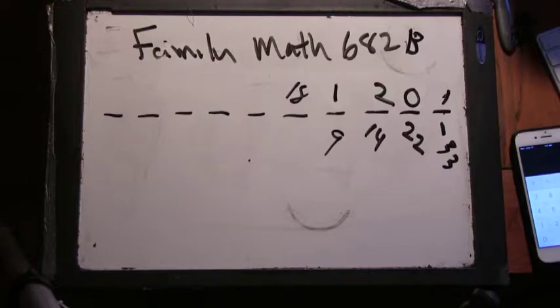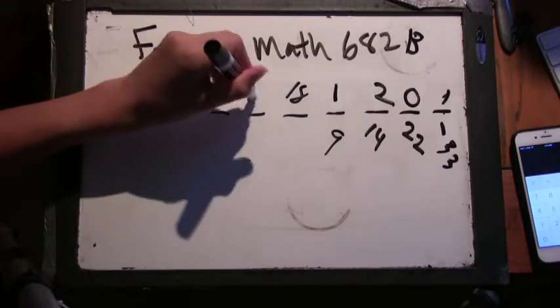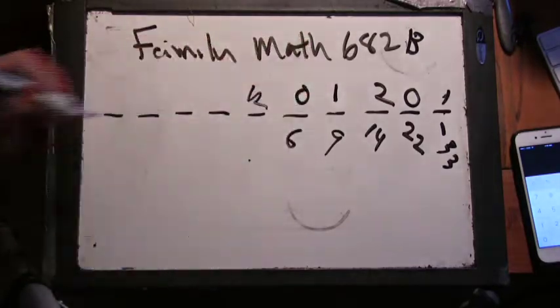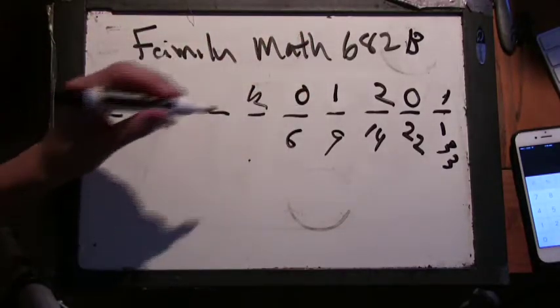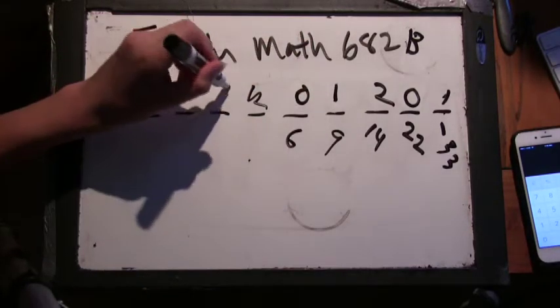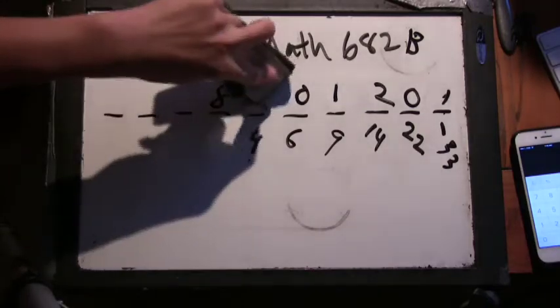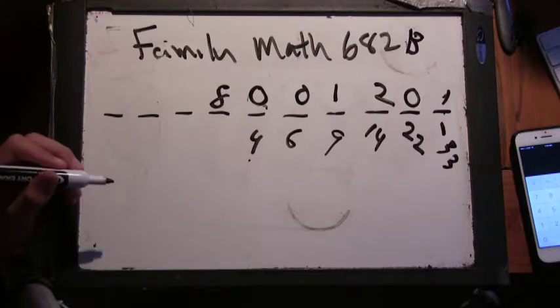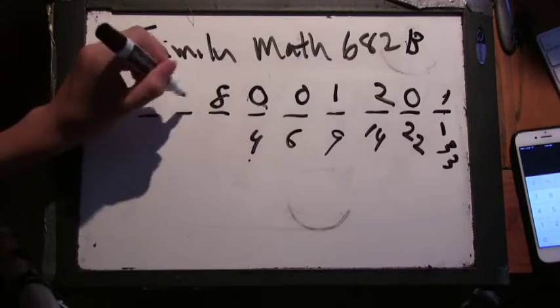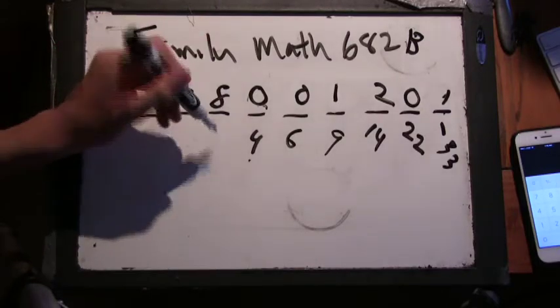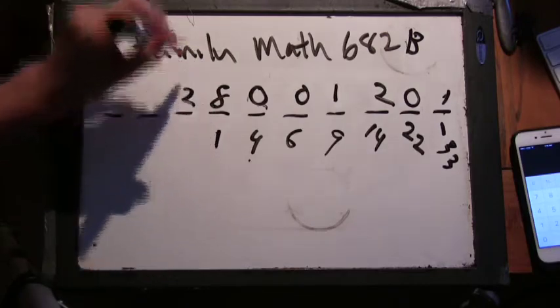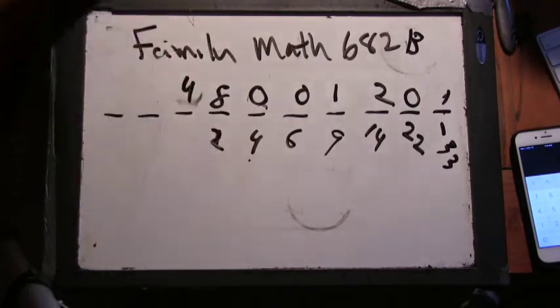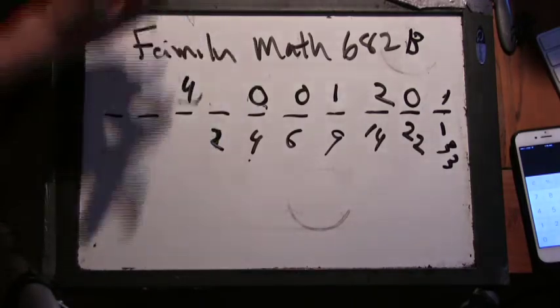Now we're going to have six groups, so twelve, six, and zero. Then four groups, eight, four, zero. Then we're going to have two groups, so four, two, and two stay here.